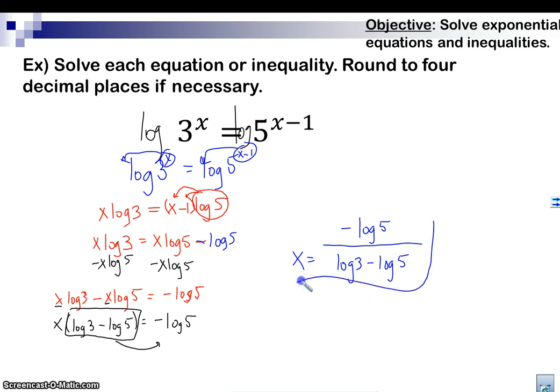It's going to be x equals negative log 5 all over log 3 minus log 5. And this is our answer. And, again, you can plug this in into your calculator, and you can get your solution in four decimal places. So, just remember, you've got to subtract, factor, move over, divide. Got it? Good.